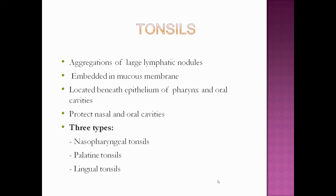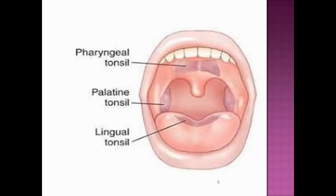Now we will see some organs fully composed of lymphatic tissue. Tonsils are an aggregation of large lymphatic nodules embedded in the mucous membrane, located beneath the epithelium of the pharynx and oral cavities, protecting the nasal and oral cavities. There are three types: nasopharyngeal tonsils, palatine tonsils, and lingual tonsils.